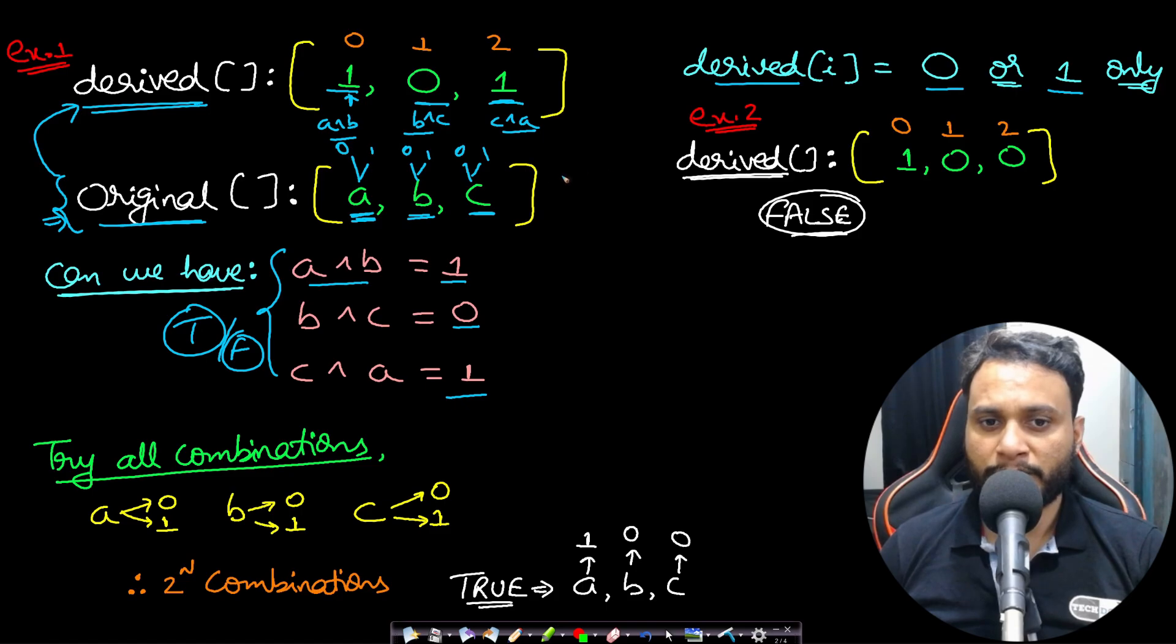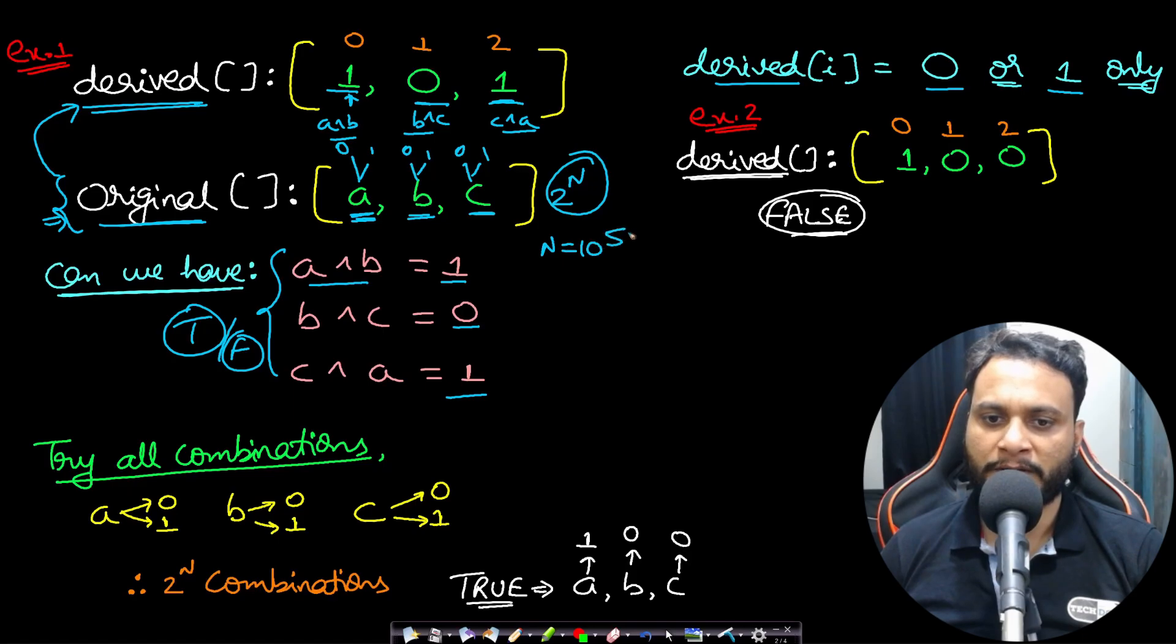So if you generate all the possibilities, there will be 2^n possibilities, and we already know that n can be maximum 10^5. So that will be a huge number, and definitely we cannot solve by this method.